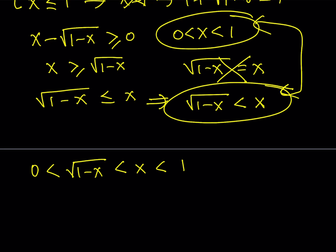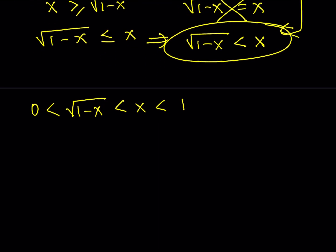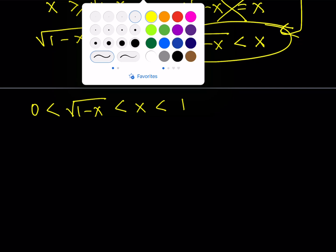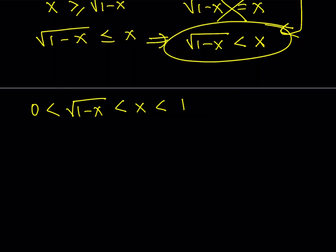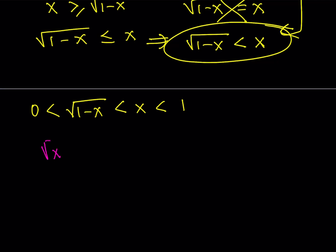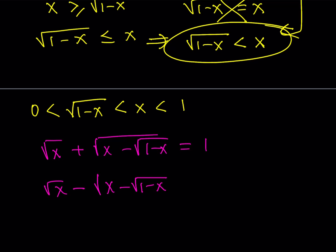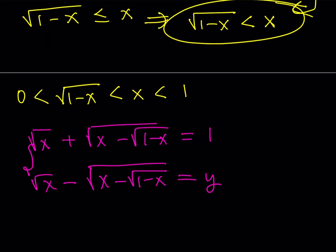Now let's write down our original equation one more time and pair it with something nice for our first solution method. The original problem is: square root of x plus square root of (x minus square root of (1 minus x)) equals 1. I'd like to pair this with its conjugate: square root of x minus square root of (x minus square root of (1 minus x)). Since I don't know what this equals, I'll set it equal to y.